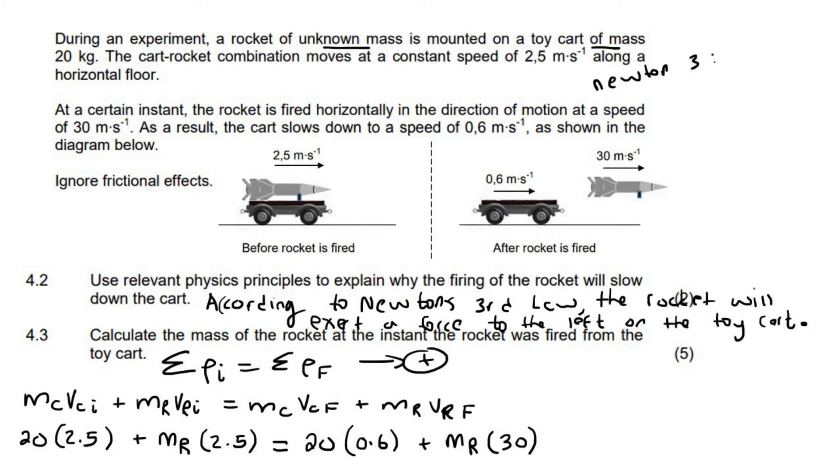Okay. Now we just need to simplify. Okay. So that's going to give us 50 plus 2.5 MR is equal to 12 plus 30 MR. Okay. And now if you take the MRs to the right, we're going to end up with a 27.5 MR equals to 38. And if you divide by 27.5, we should get a rocket mass of 1.38 kilograms, 1.38 kilograms.